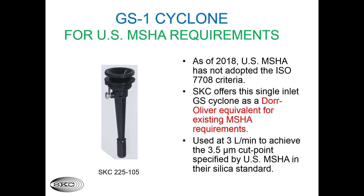As of the time of this recording, US MSHA has not adopted the ISO 7708 criteria for respirable dust samplers. Therefore, to meet the existing MSHA requirements, SKC offers a Dor Oliver equivalent called the GS1 cyclone. Like the Dor Oliver, the GS1 has a single inlet slit. It is used at 3 liters per minute to achieve the 50% cut point of 3.5 microns specified in the MSHA silica standard. The GS1 can also be used at 1.7 or 2 liters per minute for use with a diesel particulate matter cassette frequently used in mines.